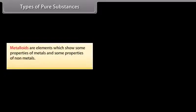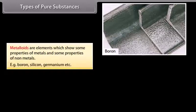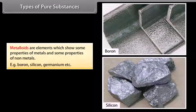Metalloids. Metalloids are elements which show some properties of metals and some properties of non-metals, like boron, silicon, germanium, etc.